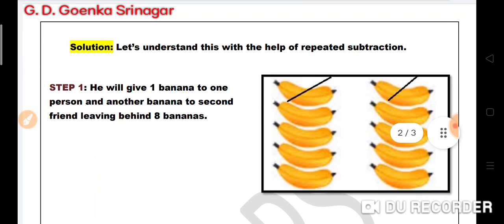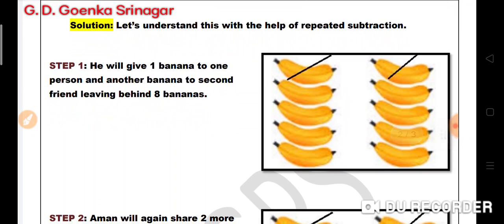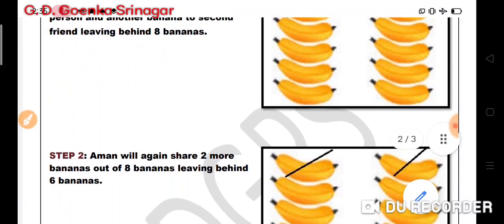Amman will give one banana to one friend and second banana to second friend, leaving behind 10 minus 2 is equal to 8. He is left with 8 bananas after taking away 2.